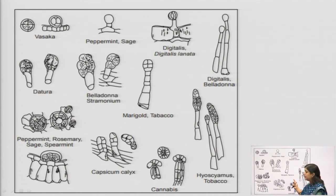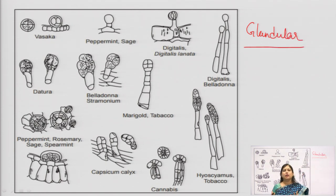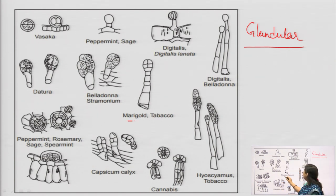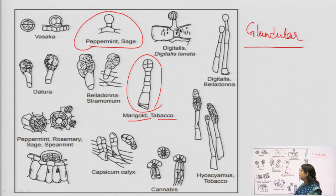These are glandular trichomes — trichomes which produce secretions or volatile oils for protection of the plant. For example, marigold or tobacco has this kind of glandular trichome. Peppermint or sage has a bulb-shaped type of trichome.